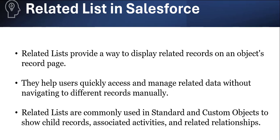For example, Accounts and Contacts are in a lookup relationship. If you want to create a Contact record from the Account object, you can navigate to the related list and create the contact record from there, without navigating to the Contact object separately.